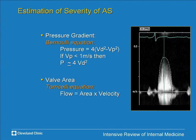Two important equations: the Bernoulli equation allows us to measure pressure from velocity of flow through a fixed orifice. The simplified equation is 4V². So if velocity is 4 m/s, the pressure gradient is 4 × 4² = 64 mmHg. If velocity is 2 m/s, the gradient is 4 × 4 = 16 mmHg. This is the E = MC² of valve hemodynamics — something you really need to know.